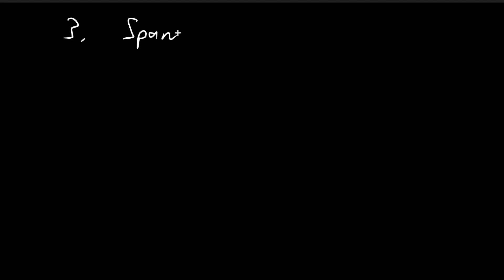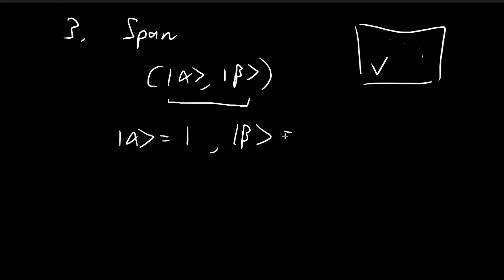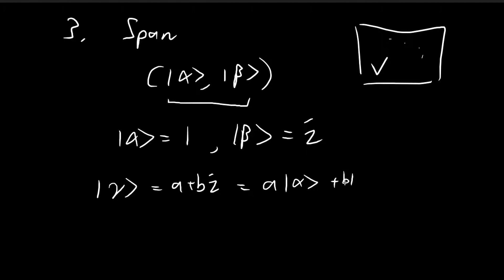The third concept is the span. If I have a set of vectors — say alpha and beta — from vector space v, and all other vectors within v can be expressed as a linear combination of alpha and beta, then we say that alpha and beta span this vector space. For example, with the set of all complex numbers, alpha equals 1 and beta equals i. Any vector a plus bi can be expressed as a times alpha plus b times beta, so alpha and beta span the vector space v.